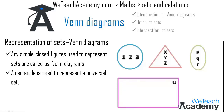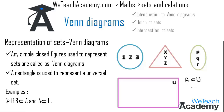Let me explain this with an example: B is a subset of A and A is a subset of U. A subset of U means U contains the elements of A, so we represent A as a circle inside the rectangle. B subset of A means the elements of B belong to A, so we draw circle B inside circle A.